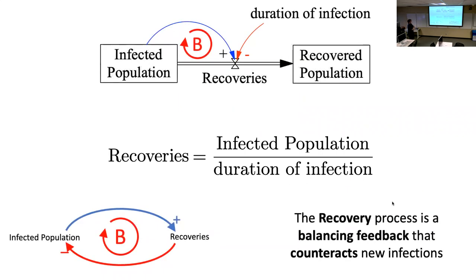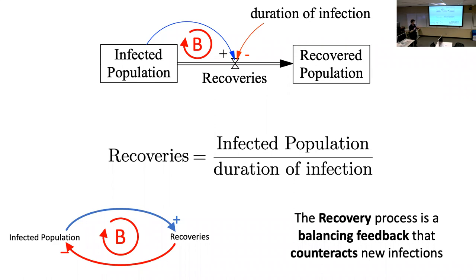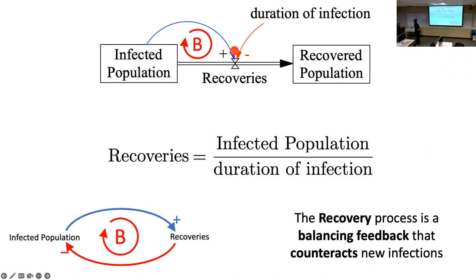To implement this formula in VenSim or InsightMaker, we draw links and introduce an exogenous variable for duration of infection. If we wanted to model a drug that reduces infection duration, we'd just change that parameter rather than modeling the drug development process inside the model. We also connect the infected population to the recoveries flow, and those two connections let us enter the equation.